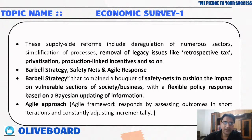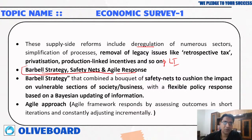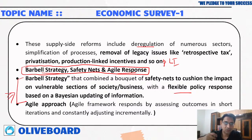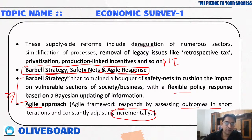Important supply-side reforms include deregulation of various sectors, simplification of processes, removal of legacy issues like retrospective taxation, and Production Linked Incentive — PLI. Then there is the barbell strategy, safety nets, and agile approach. The barbell strategy combines a bouquet of safety nets to cushion the impact on vulnerable sections of society, combined with flexible policy based on continuous data updation. The agile approach means constantly updating outcomes and adjusting inputs incrementally based on those outcomes.